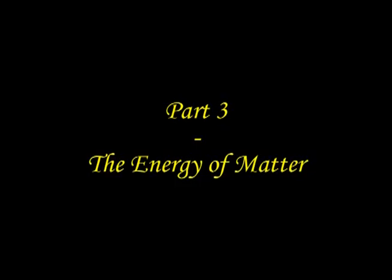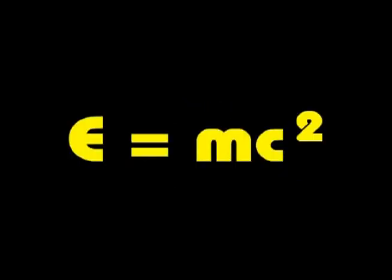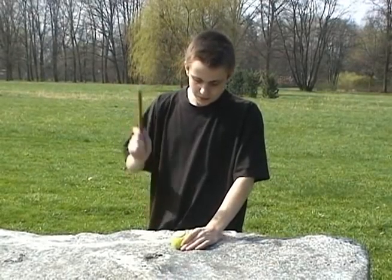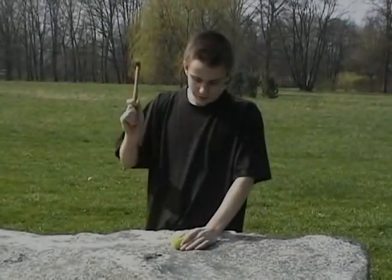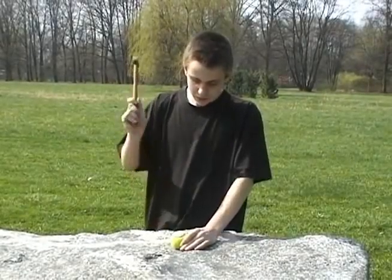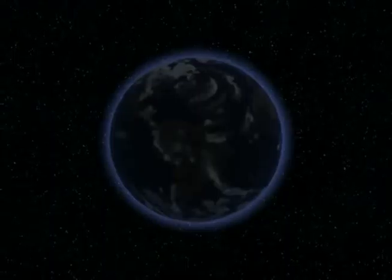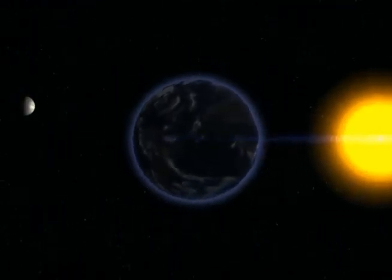Part 3: The Energy of Matter. According to Einstein's formula E = mc², all matter contains a vast amount of energy. Today, however, it is impossible to extract this energy by standard means. Even by shattering complex atoms and triggering a nuclear reaction, we gain only about 11% of usable energy.